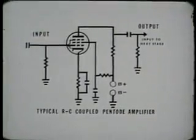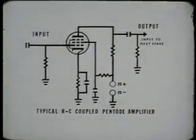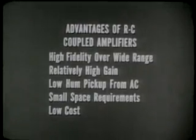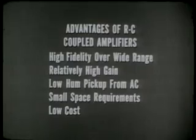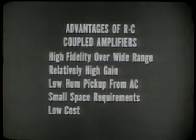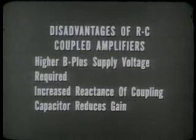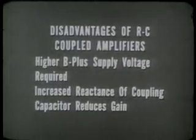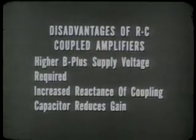Resistance-capacitance, or RC coupled amplifiers, are so termed because the amplifier stages are coupled by combinations of resistances and capacitors. Advantages of RC coupled amplifiers are high fidelity over a wide range of frequencies, relatively high gain, low hum pickup from nearby AC fields, small space requirements, and low cost. The disadvantages are that a higher B-plus supply voltage is required, and the reactance of the coupling capacitor increases at lower frequencies, thus reducing the gain.